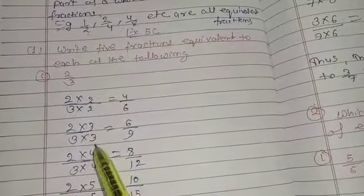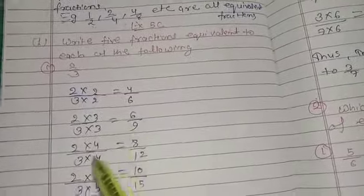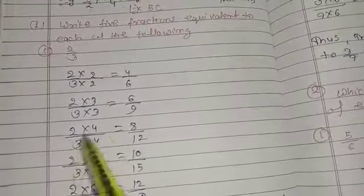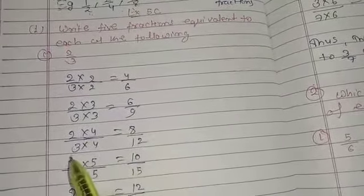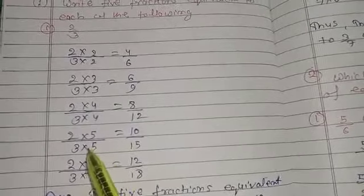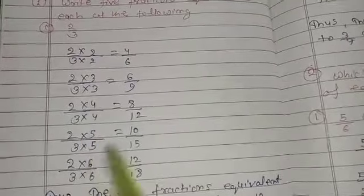To find the second equivalent fraction, multiply by 3: three times 2 is 6, three times 3 is 9. For the third, multiply by 4: four times 2 is 8, four times 3 is 12. For the fourth, multiply by 5.